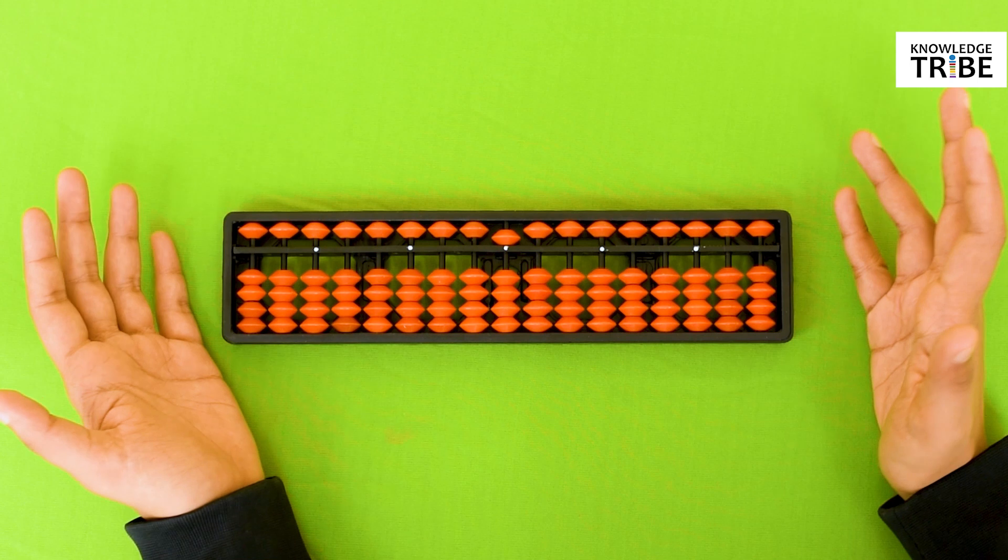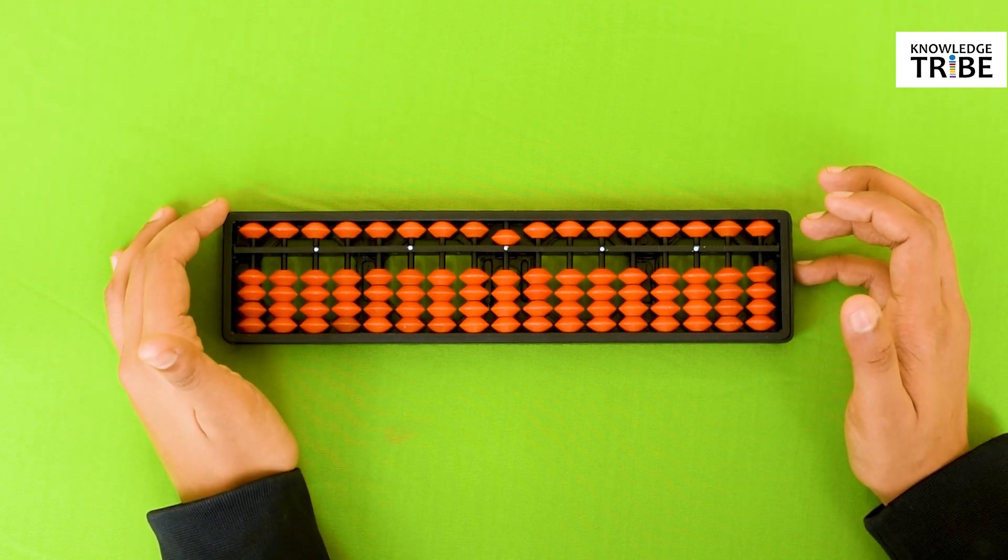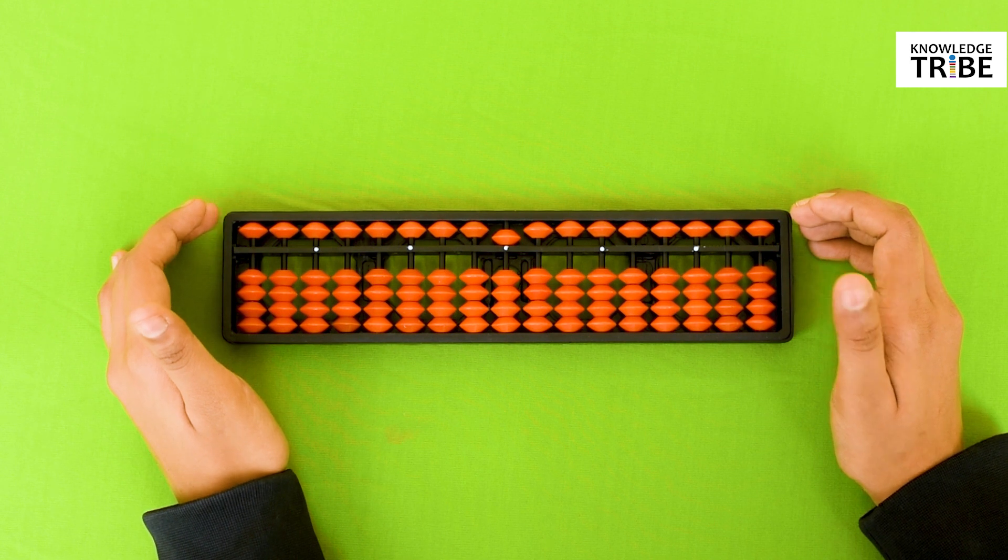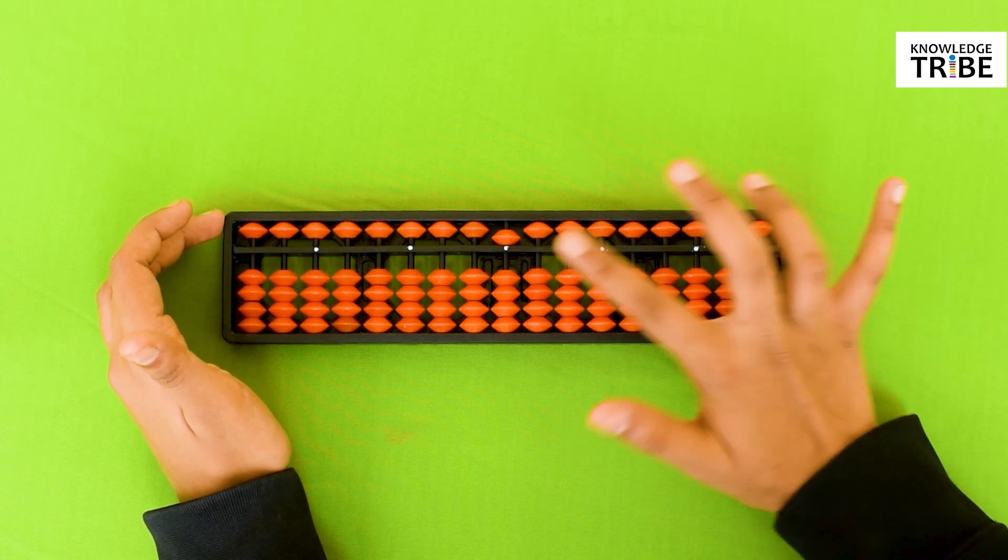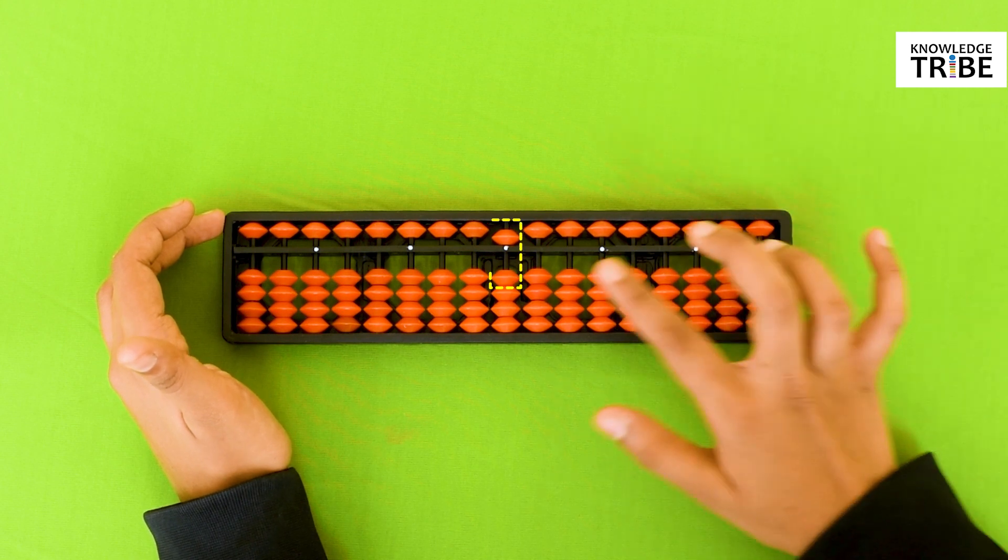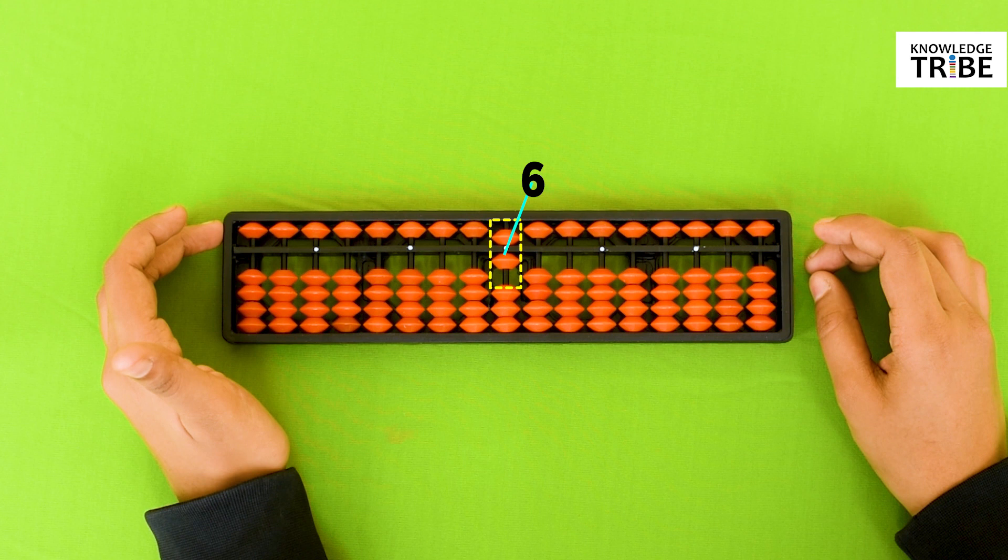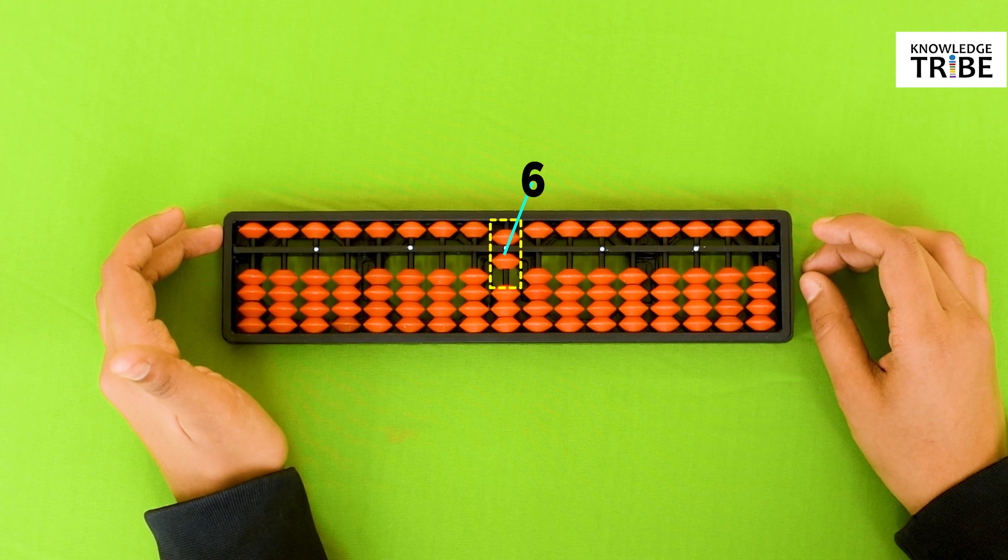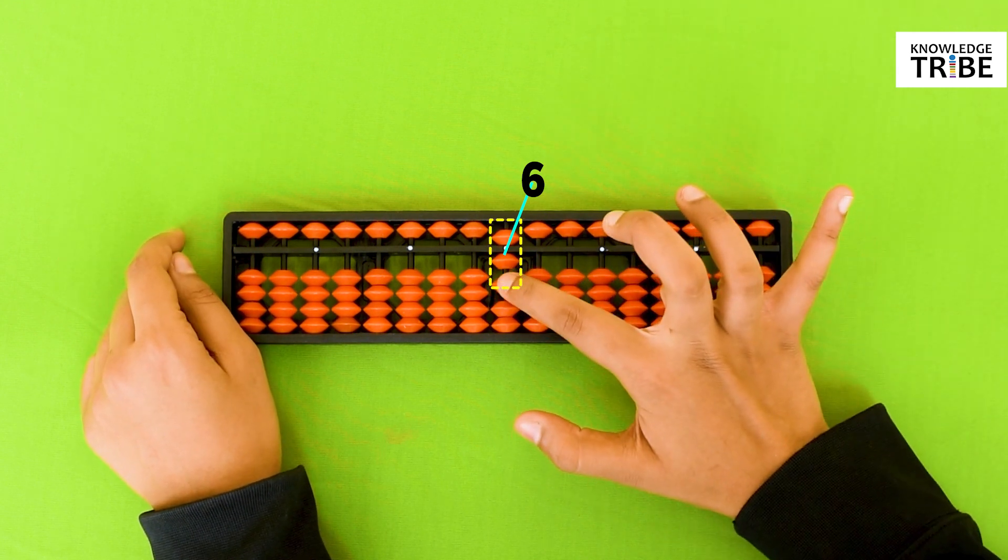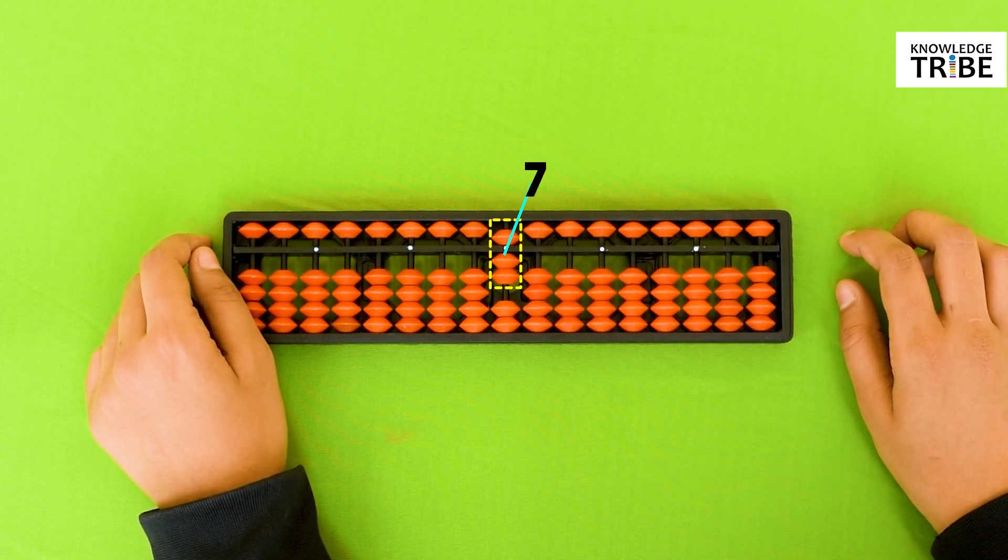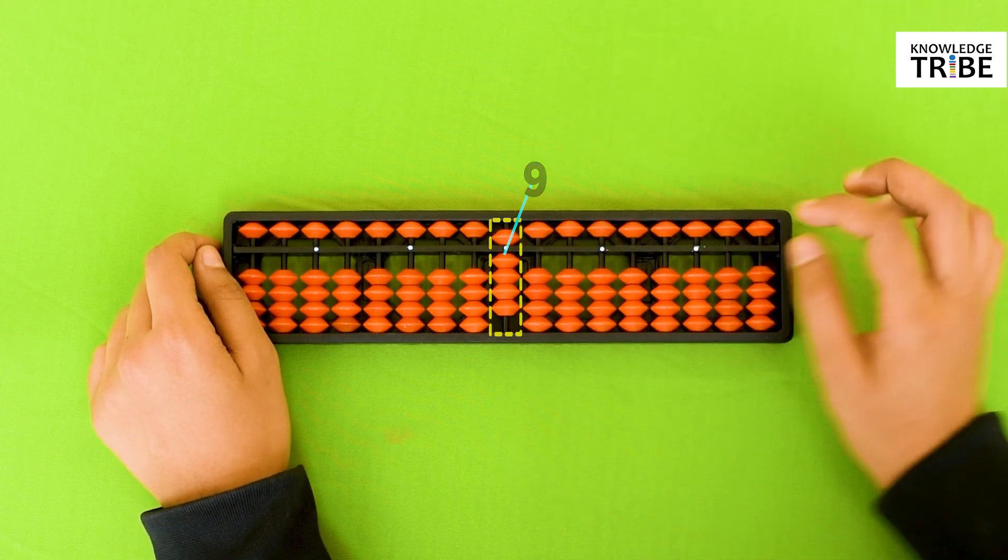Now you tell me how to write 6 with an abacus. Yes, you got it. If 1 heavenly bead means 5, you need to move 1 earthly bead towards the center of the beam. Since the value of 1 bead is 1. Now to count 7, you need to move 1 more earthly bead towards the center of the beam. It goes like this till 8 and 9.